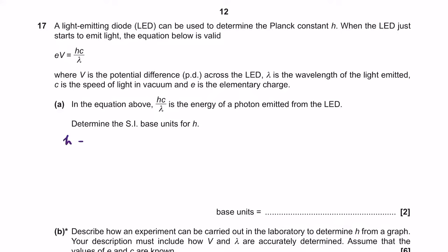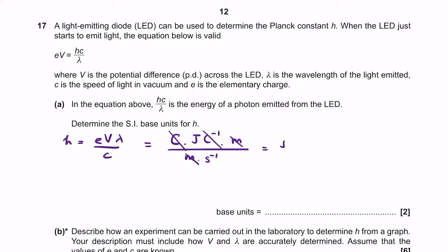Rearranging: H equals EVλ over C. E is in Coulombs, V is joules per Coulomb, λ is metres, and C is metres per second. The Coulombs cancel, the metres cancel, leaving joules times seconds. Expanding joules as kilograms metres squared per second squared, and multiplying by the remaining second, the SI base units for H are kilograms metres squared per second, or kg·m²·s⁻¹.